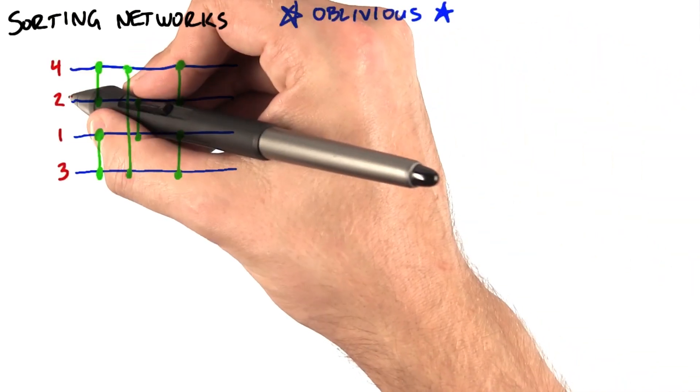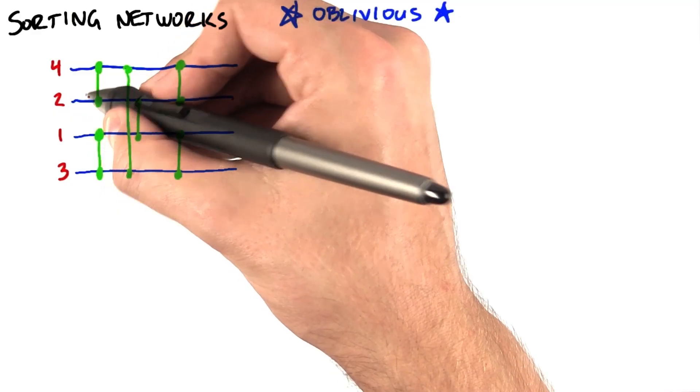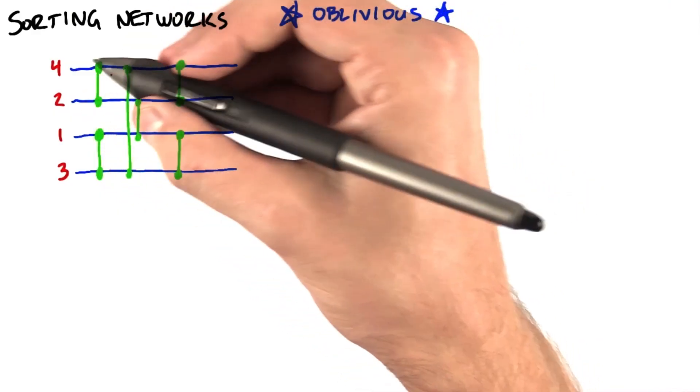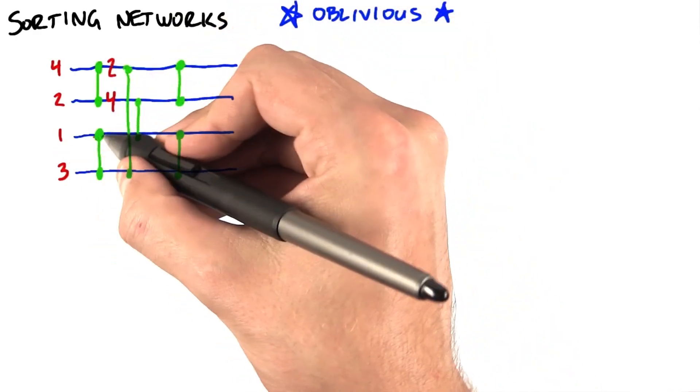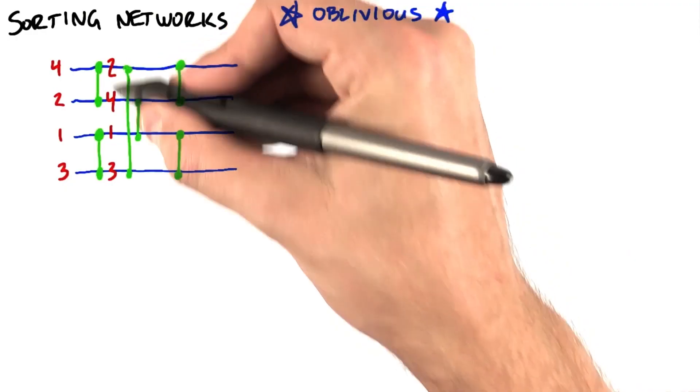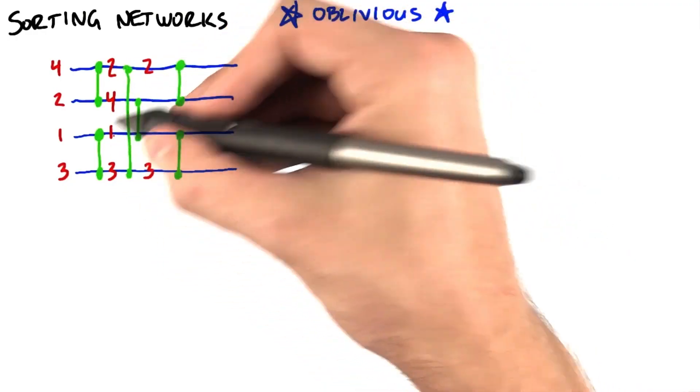So let's put some numbers on there and give it a shot. We're going to start with the input sequence, four, two, one, three. Each time two elements are connected by one green line, we will swap them if they are out of order. So first we'll swap two and four, but we won't swap one and three because they're in the right order. Now we will look at two and three, and we don't have to swap them, but we do have to swap one and four.